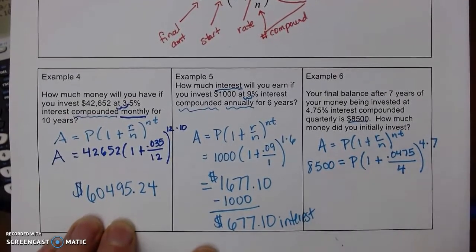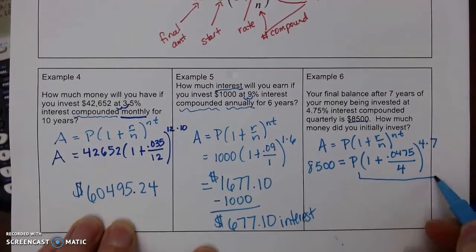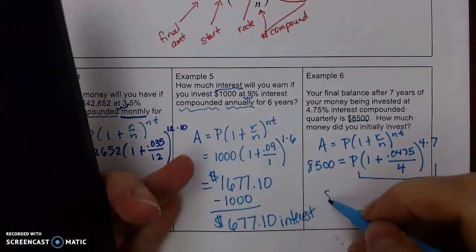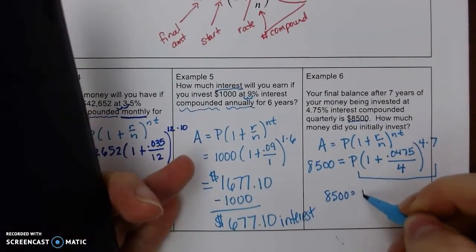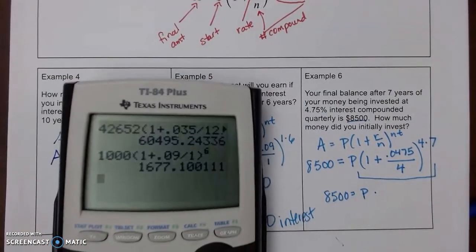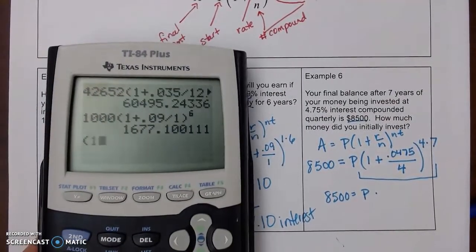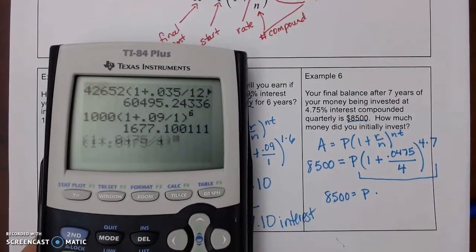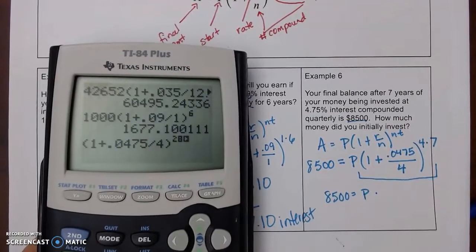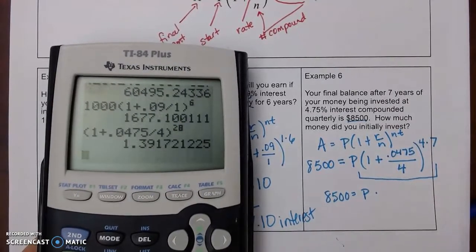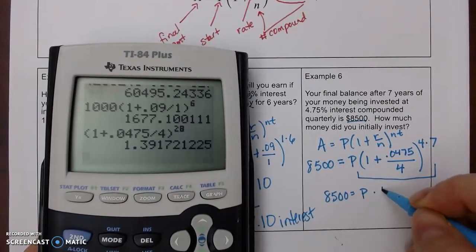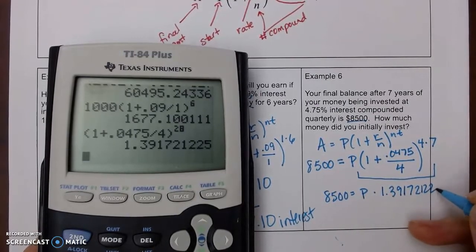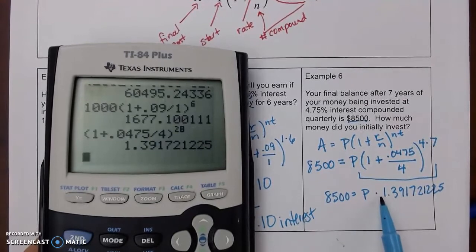Okay. So, now, to find P, I need to find this amount right here. So, we're going to type that into a calculator. I get $8,500 equals P times all of that. So, divided by 4, to that, 4 times 7 is 28. Now, that is a big, long decimal. It's better if you don't round this. And so, I know I'm going to divide.